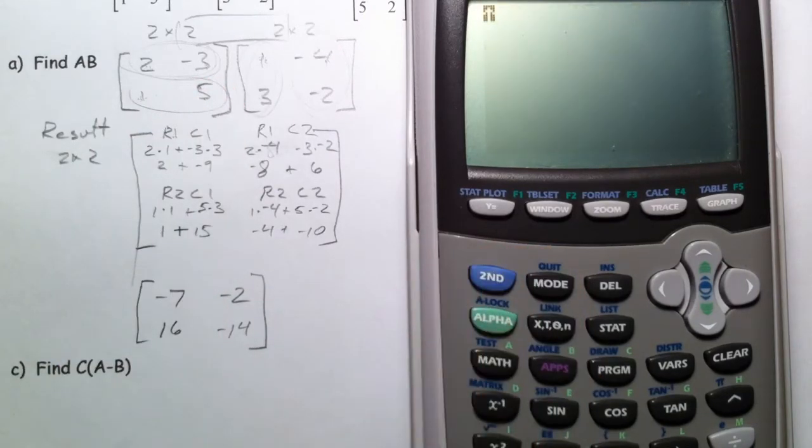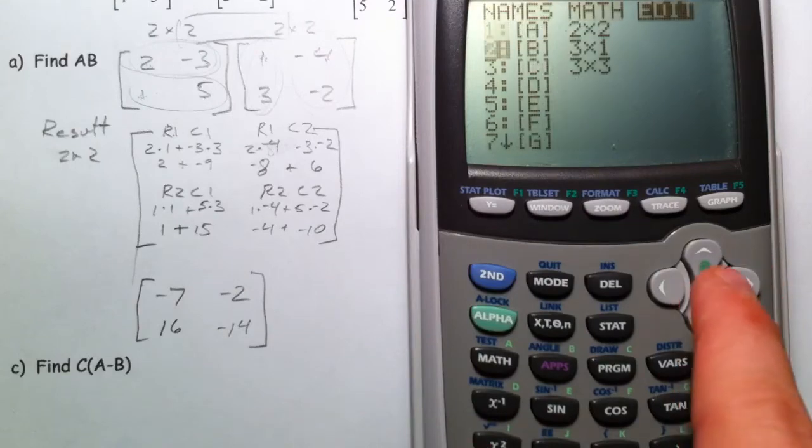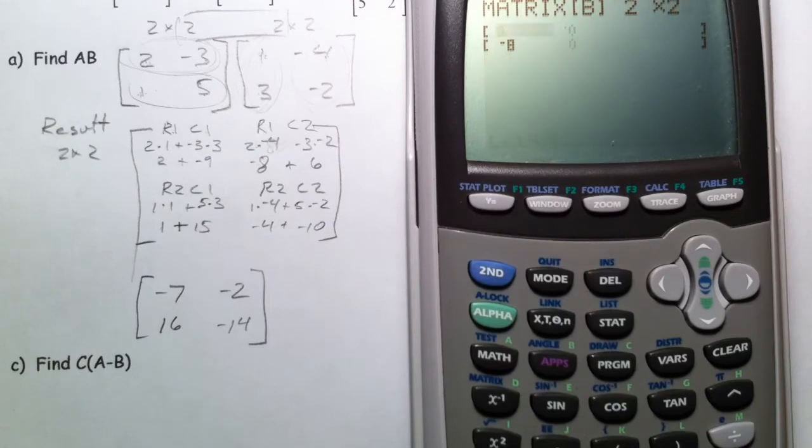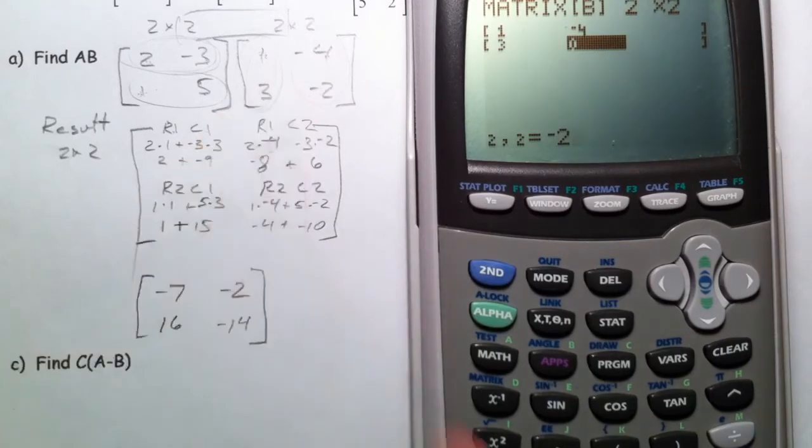Quit out of that. You can go back into matrix and matrix B. And we got another 2 by 2. 1, negative 4, 3, negative 2. Entering matrix B.